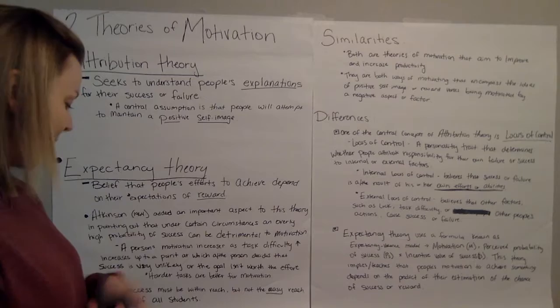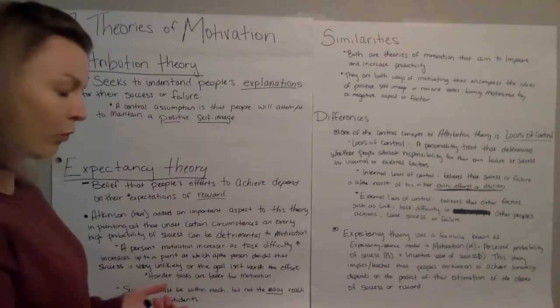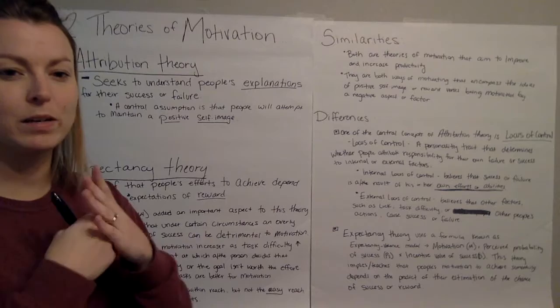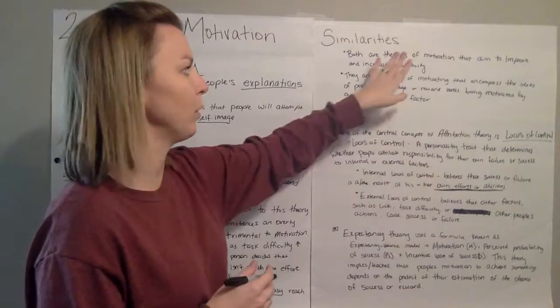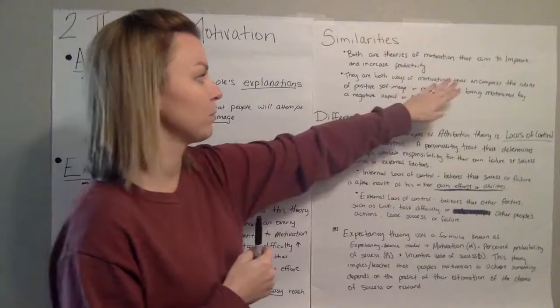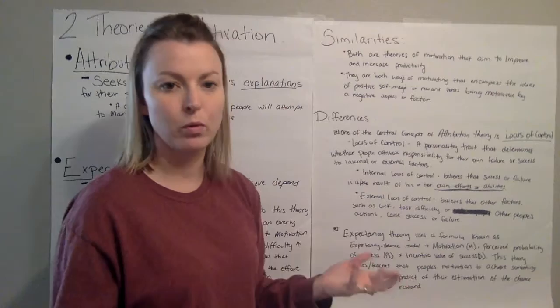Not an easy reach, but reach for all students. So kind of like reaching an A or a B, it should be attainable for students, but it shouldn't be easy. They shouldn't just be handed out. So if we look over here at the similarities and differences for these two theories, we see that both are theories of motivation that aim to improve and increase productivity. And they're both ways of motivating that encompass the idea of positive self-image or reward versus being motivated by something negative.